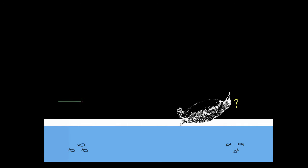But Walter is a clever and curious penguin. So while he's sliding, he's thinking about energy conservation, and he's confused. Because he knows that he starts off over here with some amount of kinetic energy, but he ends over here with no kinetic energy since he slides to a stop. So he wonders, how can energy be conserved when he seems to be losing kinetic energy?